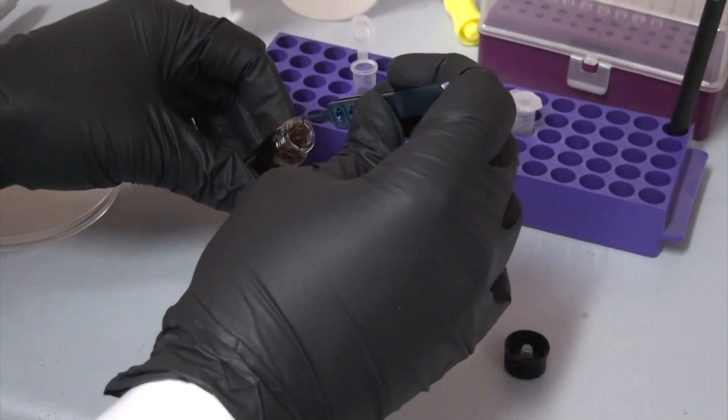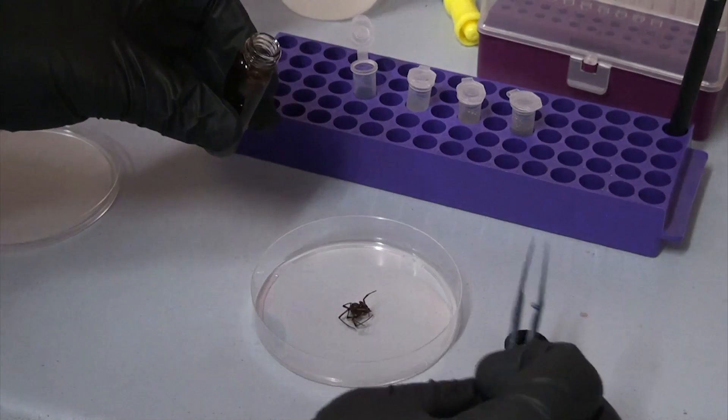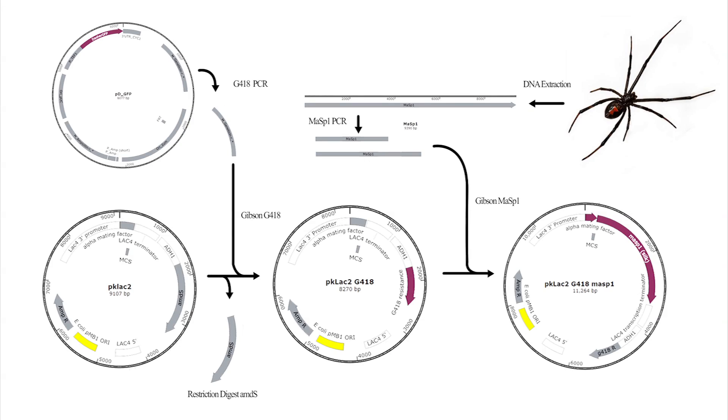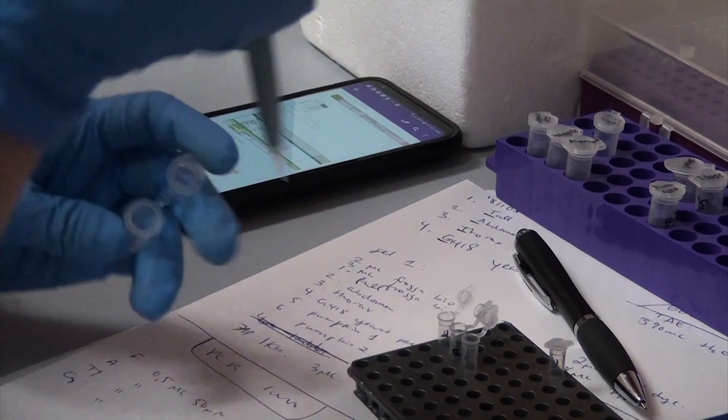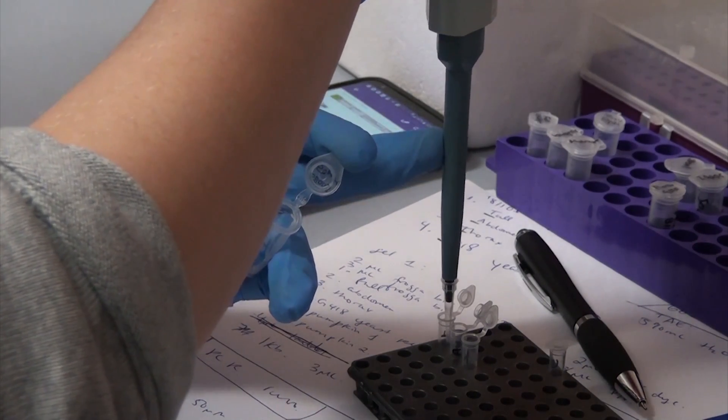Those of you that have been following along know that over the past several weeks we've been working on a project to make a type of yeast-produced spider silk, and probably recognize this roadmap. There are all sorts of tricks and techniques we'll need to make it through this project, and so today we're going to focus on one of them and simultaneously take a step or two forward on the project.